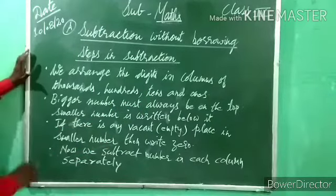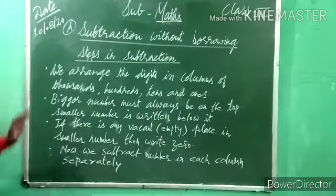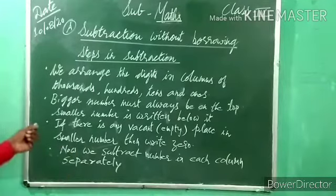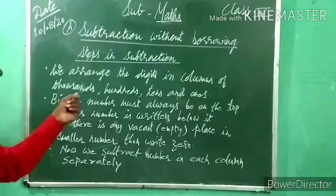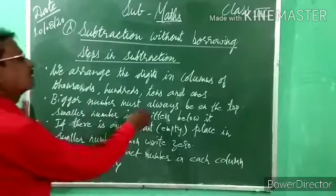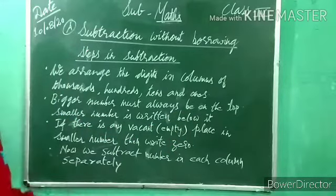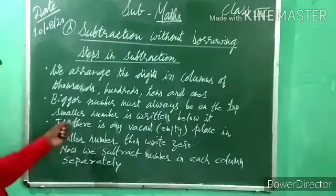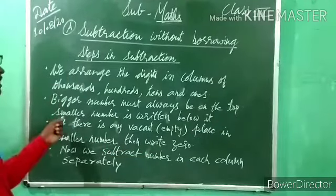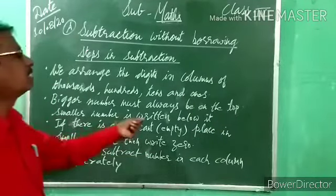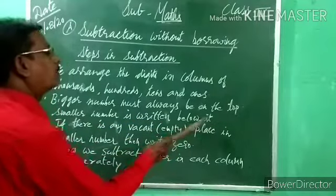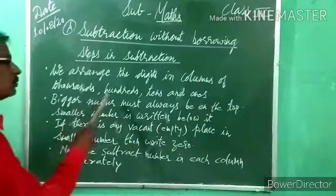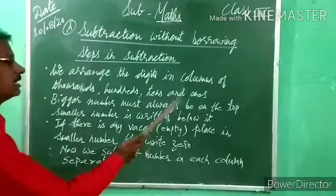Second step: the bigger number must always be written on top. Sabse bada number upar aana chahiye. Smaller number is written below — top means upar, below means niche.